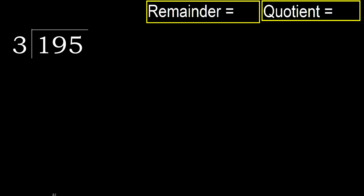195 divided by 3. 1 is less, therefore next. 19 is not less, therefore with 19: 3 multiplied by which number is nearest to 19?